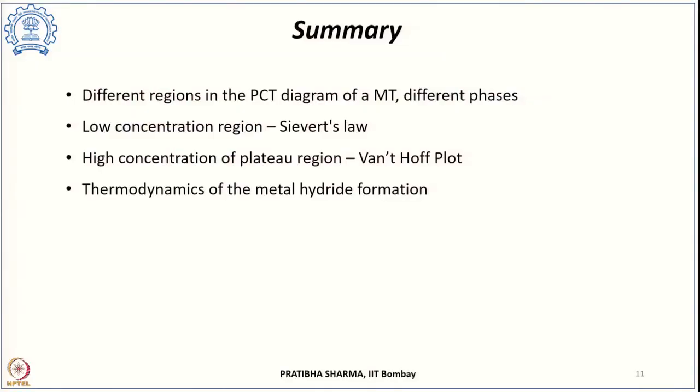To summarize: the pressure-composition-temperature isotherm has different regions — the alpha phase, the alpha-plus-beta plateau phase, and the beta phase. Under low concentration, it follows Sievert's law; in the plateau region, it follows the Van't Hoff equation. We have seen the thermodynamics of metal hydrides, how interstitial sites in the crystal structure are occupied on hydrogenation, and the changes in electronic structure. In the next class, we will examine other properties of metal hydrides and how pressure-composition isotherms behave in real cases — including what happens to the ideal flat plateau in practice.